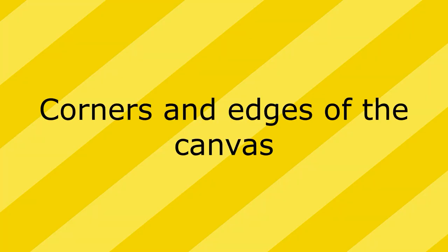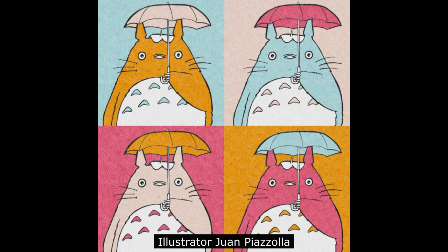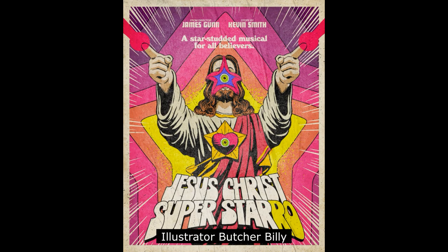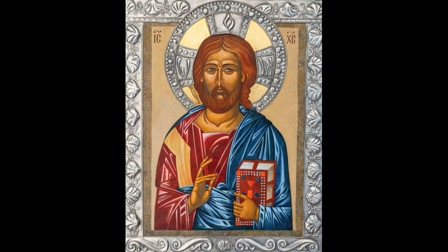The closer the subject is to the edges or corners of the canvas, the higher the tension felt. Typically, artists place the figure in the center for meditative purposes — for example, icons of various religions usually place a religious leader in the center of the composition so that a person can more easily focus their mind on him.